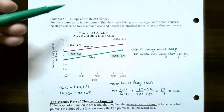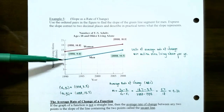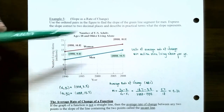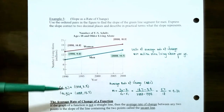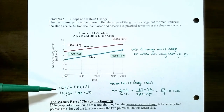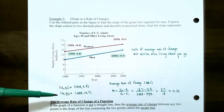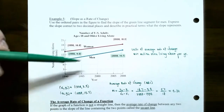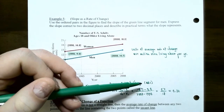Let's calculate the slope. The two points on the line are: 1990, when there were 9 million men living alone, and 2008, when there were 14.7 million men living alone. So x1, y1 is (1990, 9.0) and x2, y2 is (2008, 14.7). Keep in mind from the last video, it does not matter which point you call x1, y1 or x2, y2.